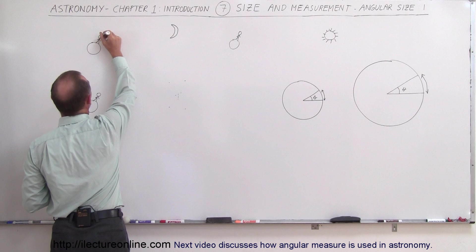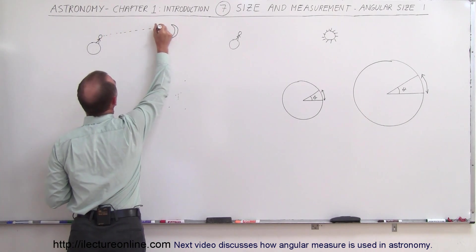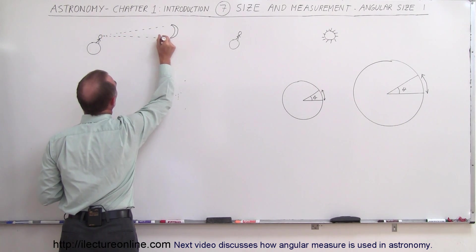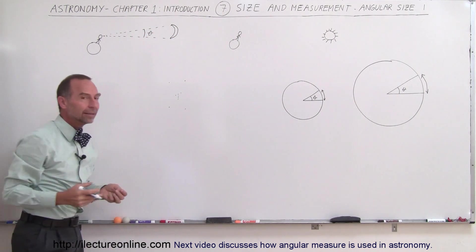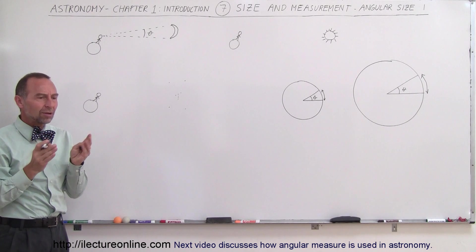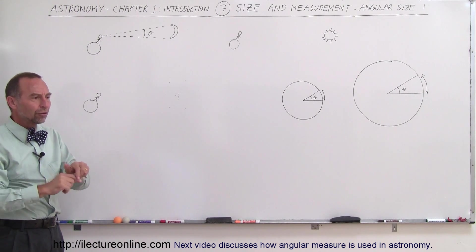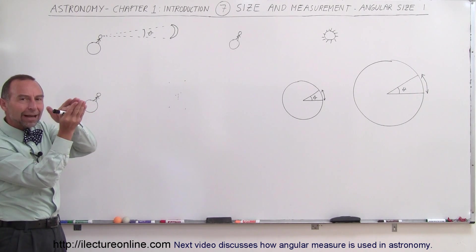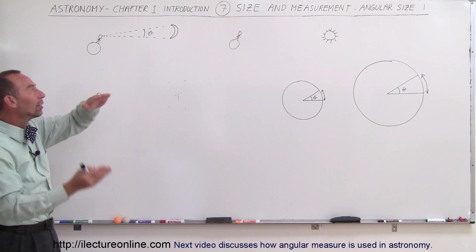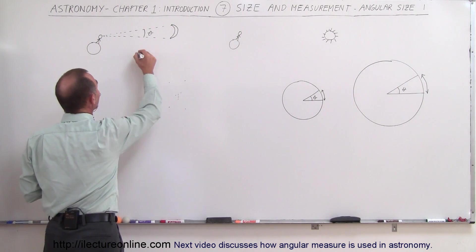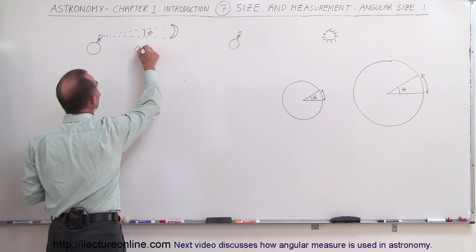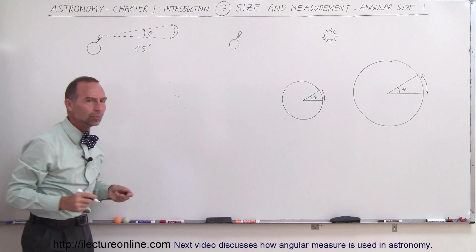If I draw a line from where I'm looking to the top of the moon and a line from where I'm looking to the bottom of the moon, notice that this makes up an angle, let's call it angle theta. We measure things in astronomy by how big they appear angle-wise. How much of an angle does this subtend? For the moon it's about one half a degree, so 0.5 degrees.